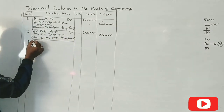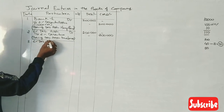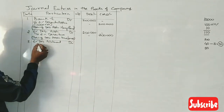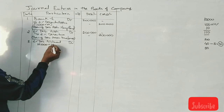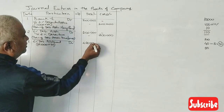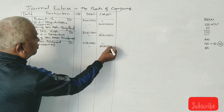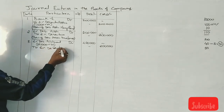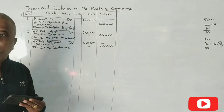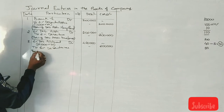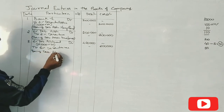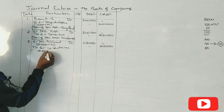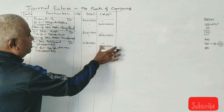Third journal entry: 6% Debenture Allotment Account debit. Allotment is ₹40, so 10,000 into ₹40 equals ₹4 lakhs. This is credited to 6% Debentures Account — 10,000 into ₹30 equals ₹3 lakhs.